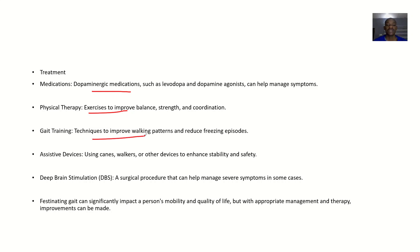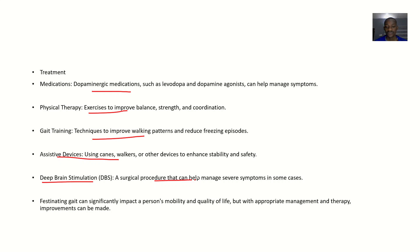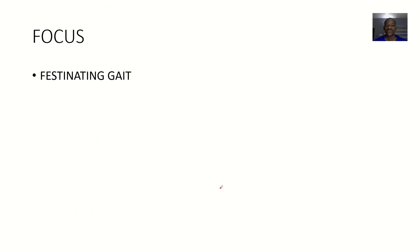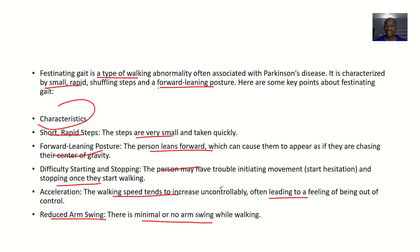Gait training involves techniques to improve walking patterns and reduce the freezing episodes the patient would usually encounter. Assistive devices like canes, walkers, or other devices can enhance stability and safety. Deep brain stimulation — a surgical procedure — can help manage severe symptoms in some cases. That covers festinating gait in Parkinson's disease.